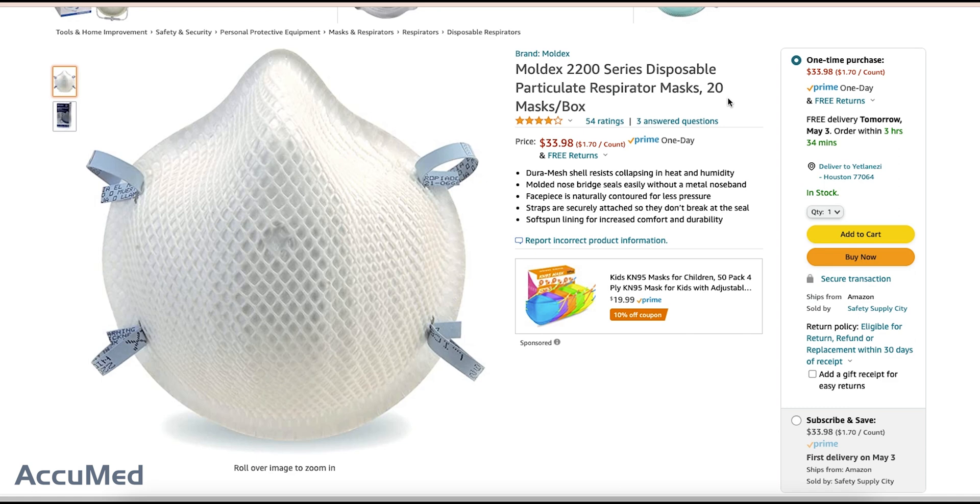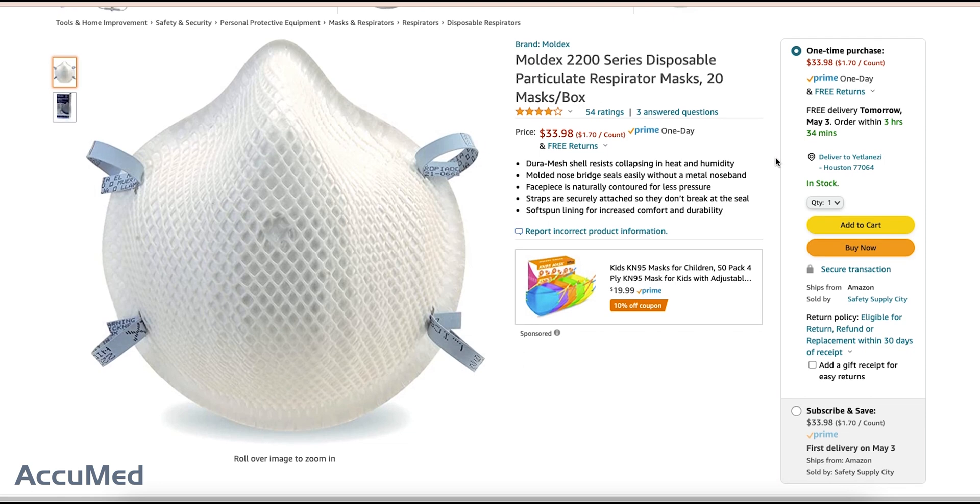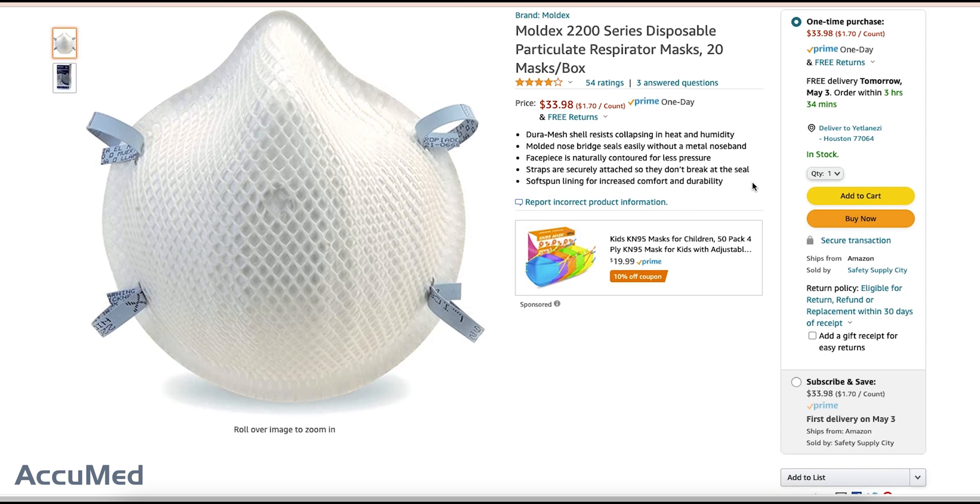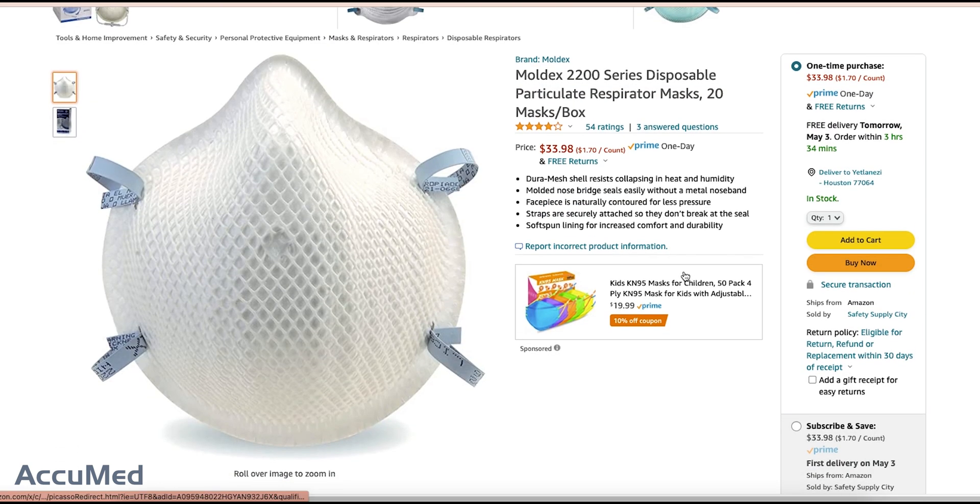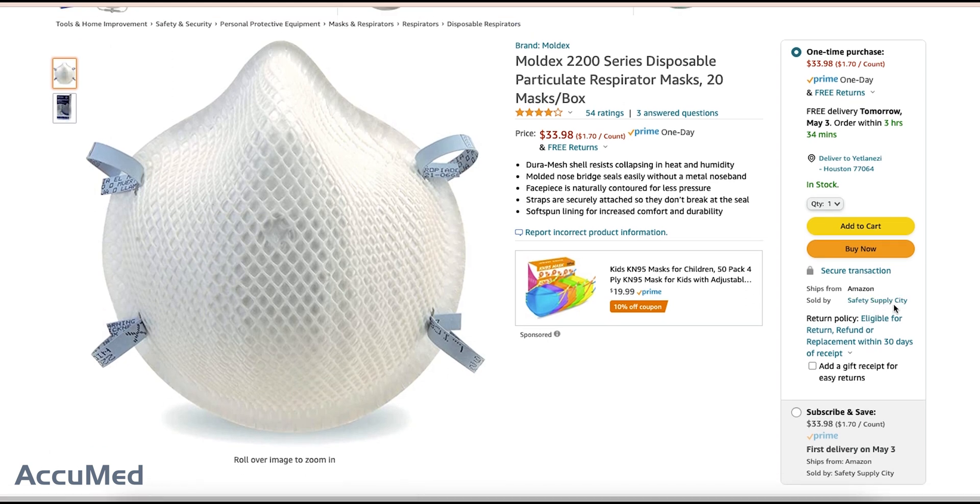Let's go over the listing before we go into the TSI testing. So this is the Moldex 2200 series disposable particle respirator mask. This comes in a pack of 20. It is currently sitting at a 4.2 out of 5 rating with 54 reviews. The current price is $33.98, which makes them $1.70 per respirator, which is a pretty reasonable price.